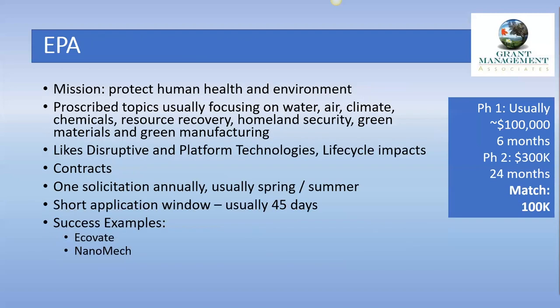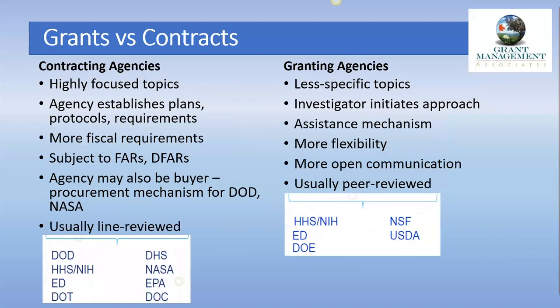EPA usually only does one application each year in the spring, with a very short 45-day window to apply. They have a very prescribed list of topics focusing on environmental concerns — water, air, climate change, resource recovery, homeland security aspects, green materials, and green manufacturing. Phase 1 is up to $100,000 for six months; Phase 2 is up to $300,000 for 24 months. Contracting agencies have highly focused topics, while granting agencies have broader topics. With contracting, the agency establishes the plans and protocols; with granting agencies, the investigator initiates their own approach. Contracting agencies may also become the buyer of your technology.